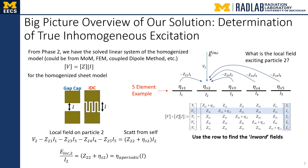The big picture overview of our solution begins with determining the true inhomogeneous excitation. From phase two, we have the solved linear system of the homogenized model — it could be from method of moments, finite element method, coupled-mode method, whatever it may be — written in the form V = ZI for the homogenized sheet model. For the example I'm going to use, we have five elements that are collinear. We have sheet impedances Z_sheet one through Z_sheet five for each element, and there are currents I_1 through I_5 driven in each of the five elements, all known from the solution of the homogenized model.